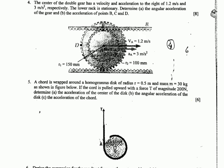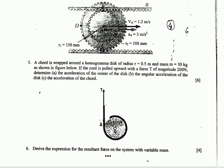Question number six asks you to derive the expression for the resultant force on a system with variable mass. This is from chapter five. I will make a video for each question one by one.